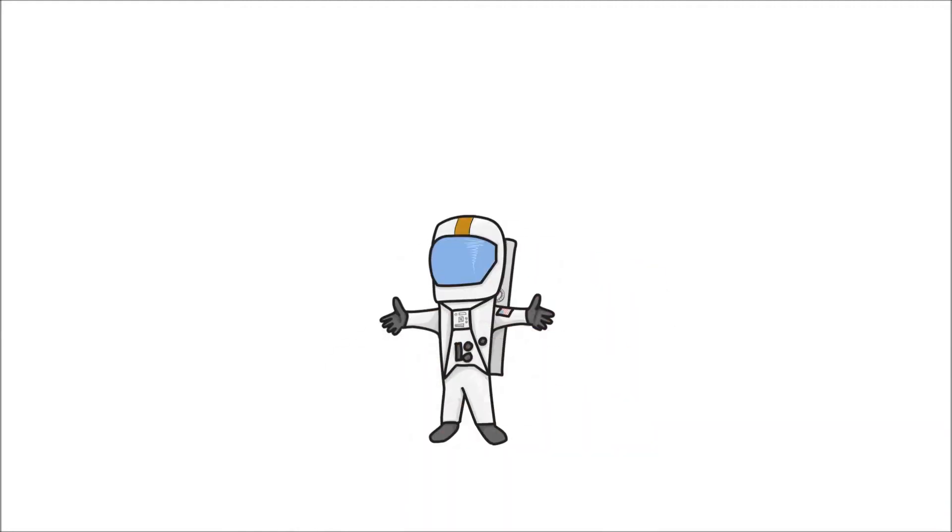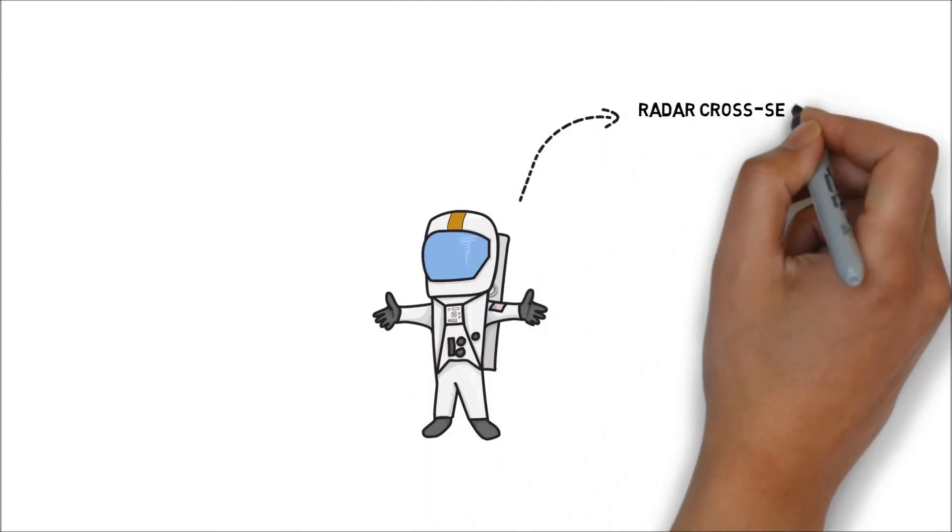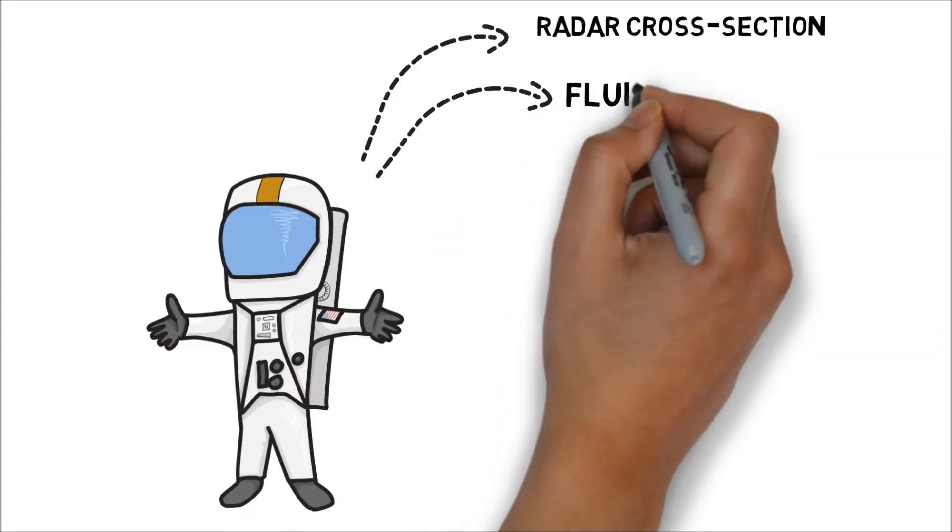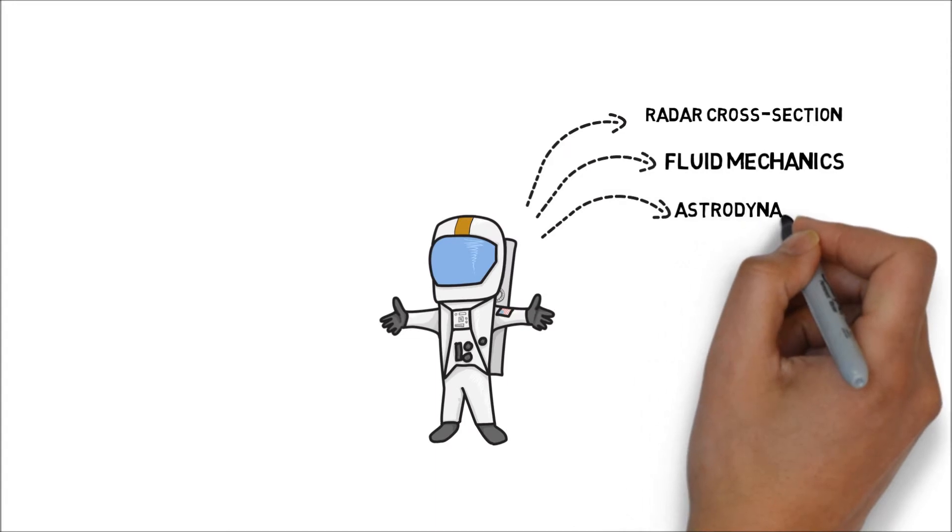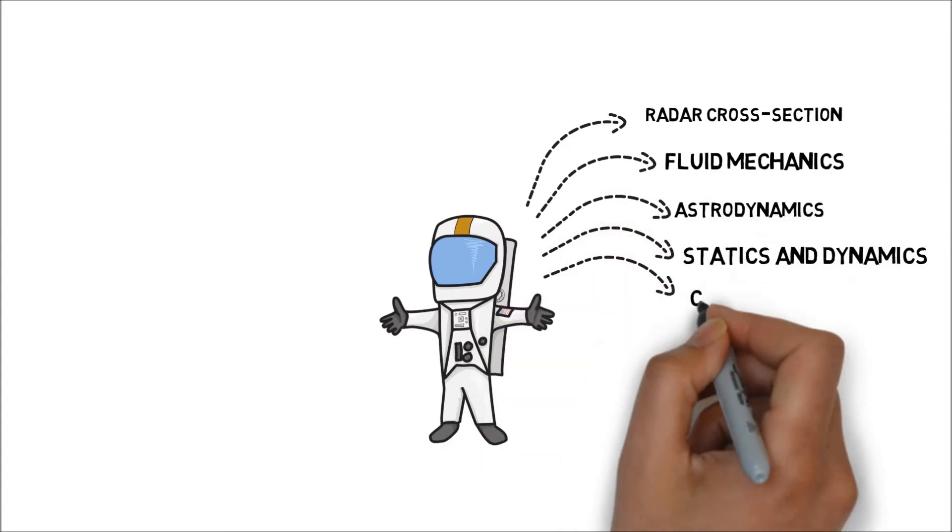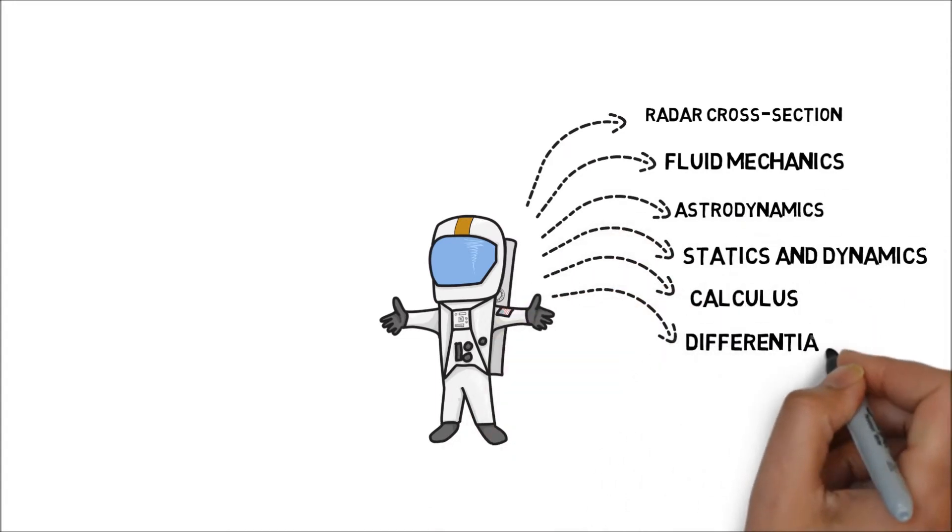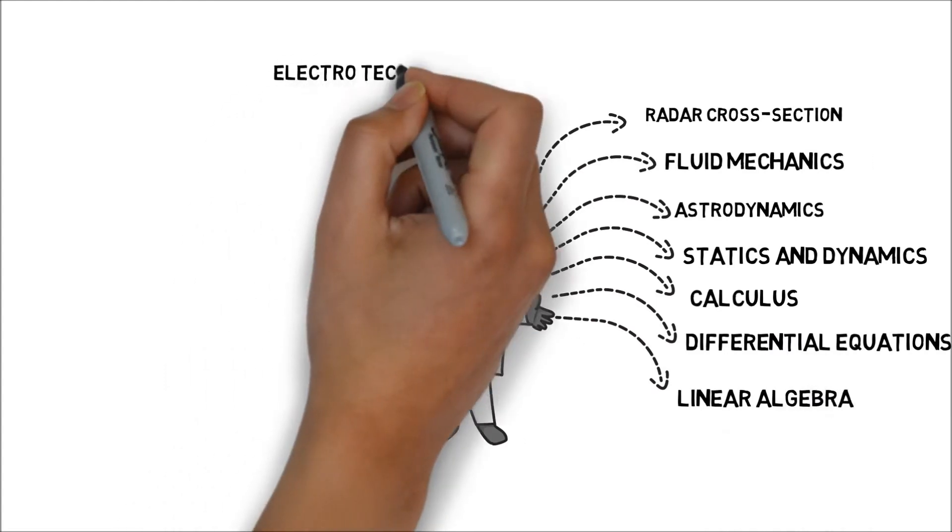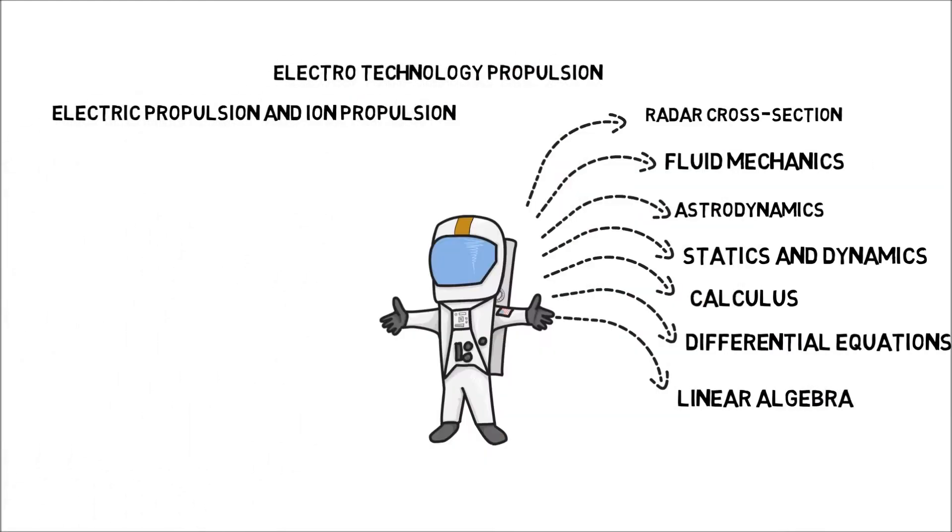To become a rocket scientist, you need to have knowledge in many subjects like radar cross-section, fluid mechanics, astrodynamics, statics and dynamics, calculus, differential equations and linear algebra, electrotechnology propulsion, electric propulsion and ion propulsion, and control engineering.